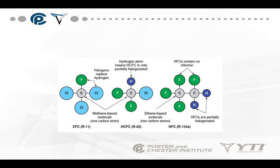Looking at the chemical makeup, you can see the difference in the three types of refrigerants. CFC — R11 on the left — has three chlorine molecules. The HCFC in the center still has chlorine but also has hydrogen. The HFC on the right is at this point the most safe for our environment because it has no chlorine. We don't yet know everything else it does since it's still relatively new, but we do know there's no chlorine.